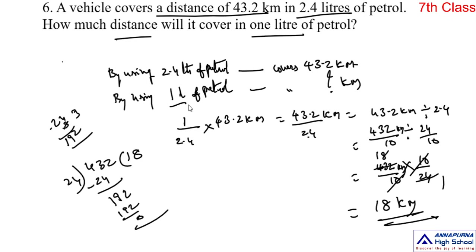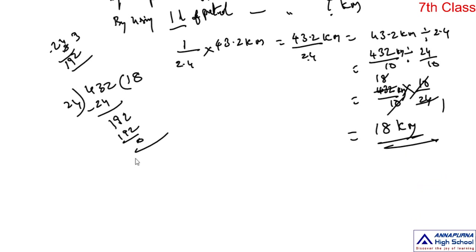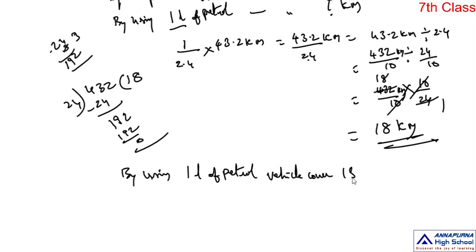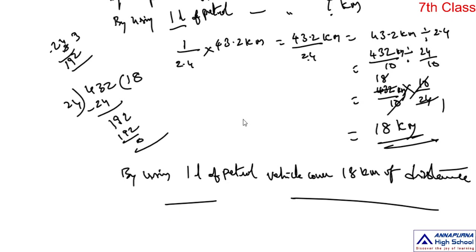By using one liter of petrol, a vehicle covers 18 kilometers. Finally, we can write: by using 1 liter of petrol, the vehicle covers 18 kilometers of distance. Okay students, this is the last topic of this chapter. Be prepared thoroughly with this chapter. Let us continue in the next video. Thank you.